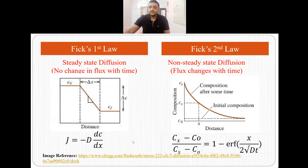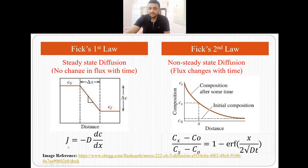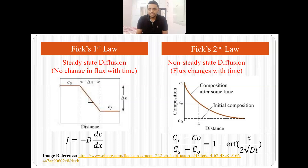The difference between the two laws: Fick's first law is for steady state diffusion; Fick's second law is for non-steady state diffusion. In the first law there is no change in flux with time; in the second law there is a change in flux with time. The equation for Fick's first law is J = -D(dC/dx), and it is used to describe how many atoms or species are flowing through the material. Fick's second law is used to find the concentration of the diffusing species at a certain depth after a certain amount of time. So the goal of the first law is to find J (flux), while the goal of the second law is to find Cx.